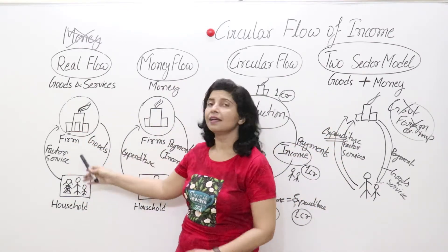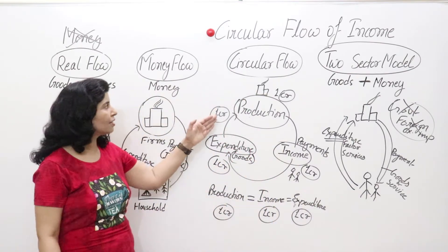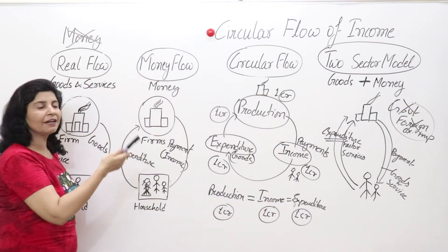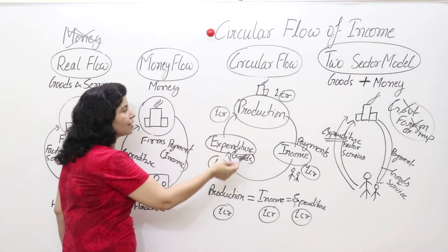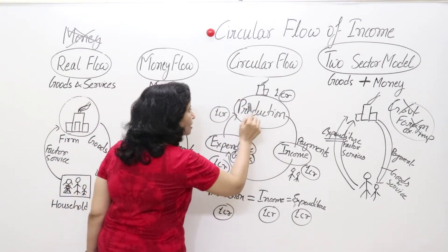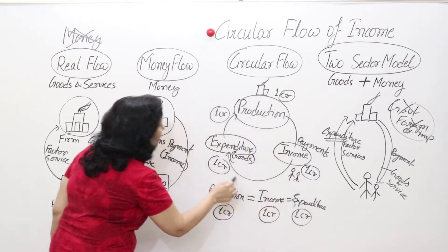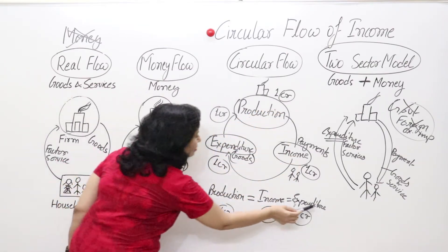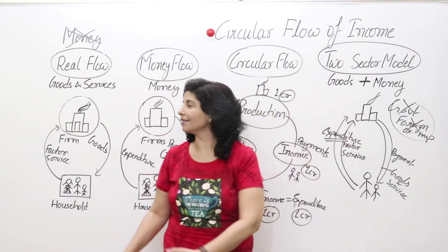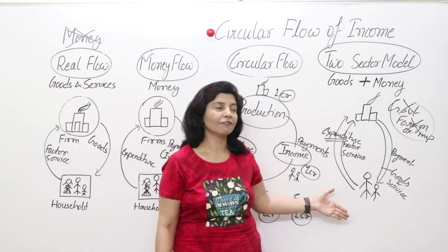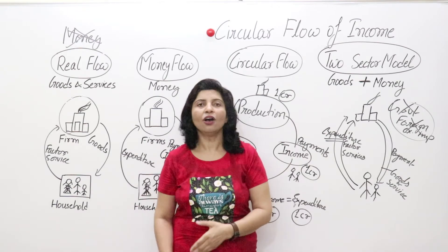Real flow is the flow of goods and services only — no money. Money flow is the exchange of money between households and firms: you get payment and give expenditure. Circular flow has three phases — production phase, income phase, and expenditure phase. You produce goods and services worth 1 crore, receive payments from firms, and spend on them: 1 crore, 1 crore, 1 crore. This is triple identity because all phases are equal in value and there is no leakage. The two sector model is the combined form of real flow and money flow.